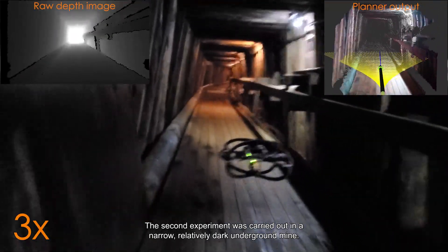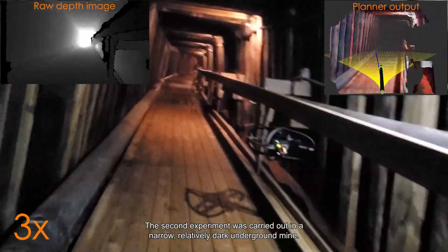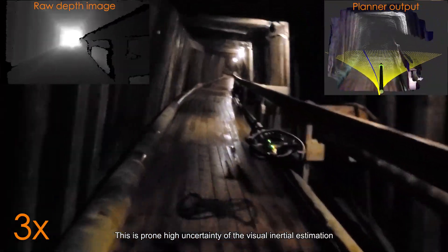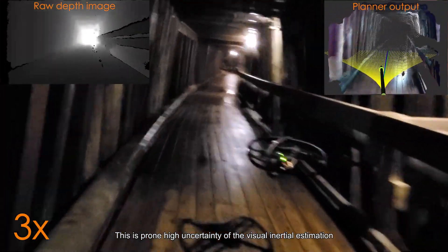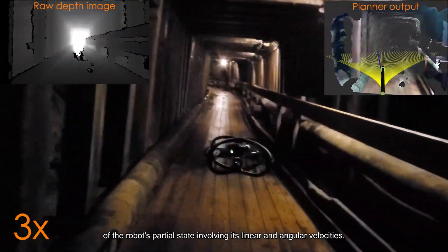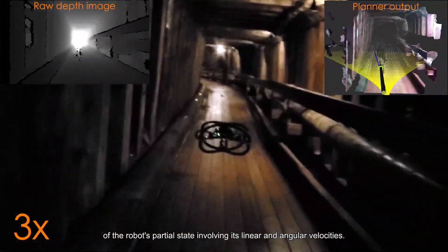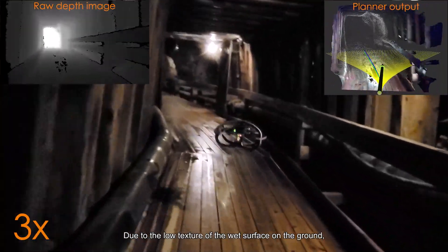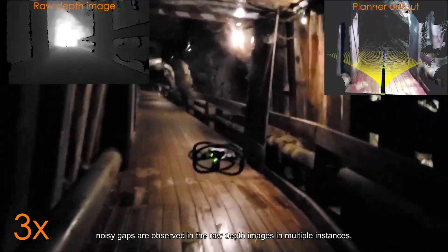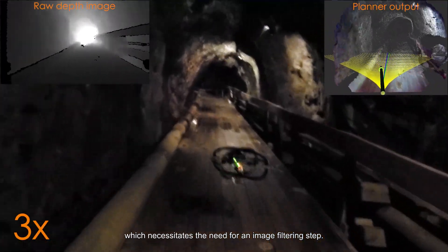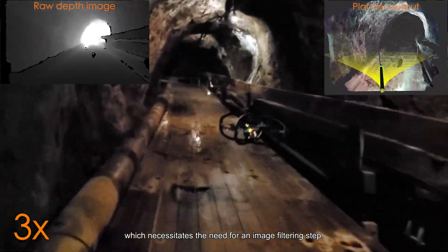The second experiment was carried out in a narrow, relatively dark underground mine. This is prone to high uncertainty of the visual inertial estimation of the robot's partial state involving its linear and angular velocities. Due to the low texture of the wet surface on the ground, noisy gaps are observed in the raw depth images in multiple instances, which necessitates the need for an image filtering step.